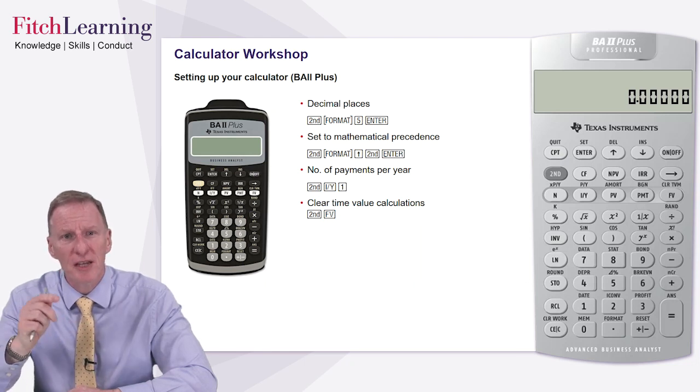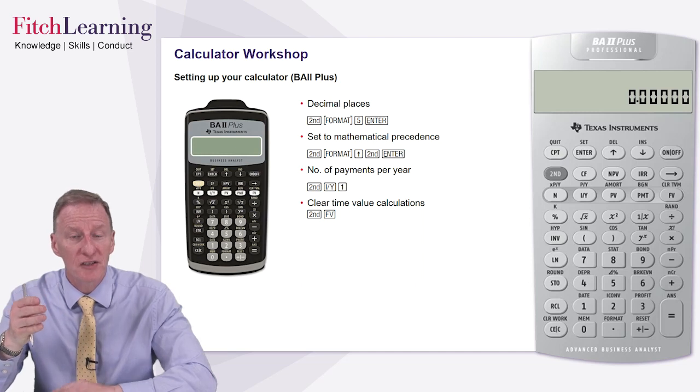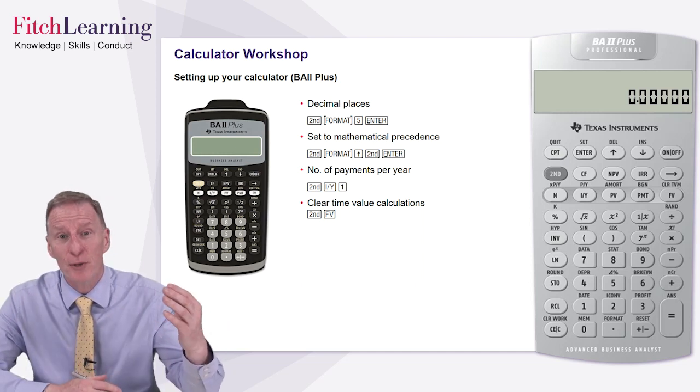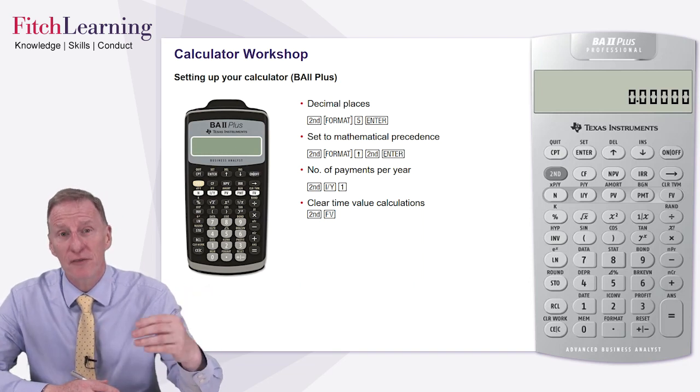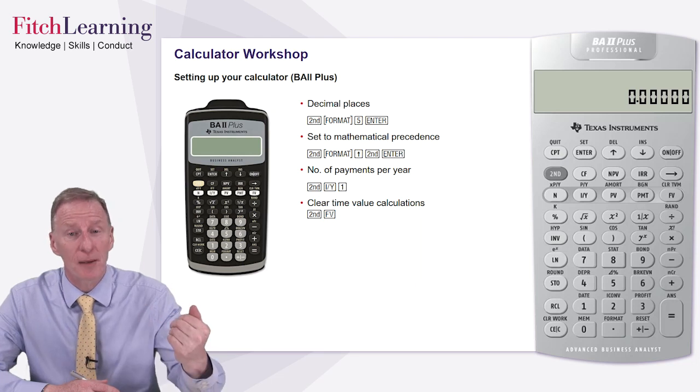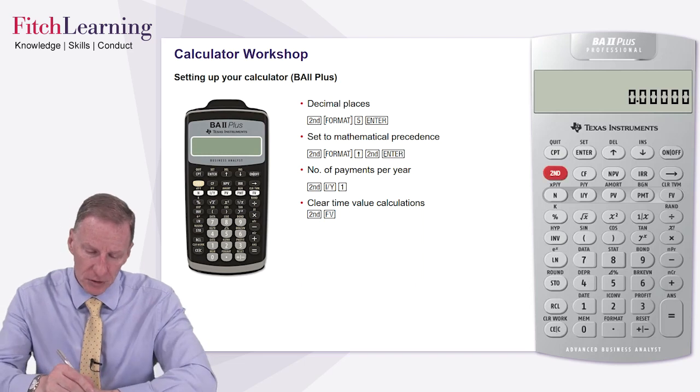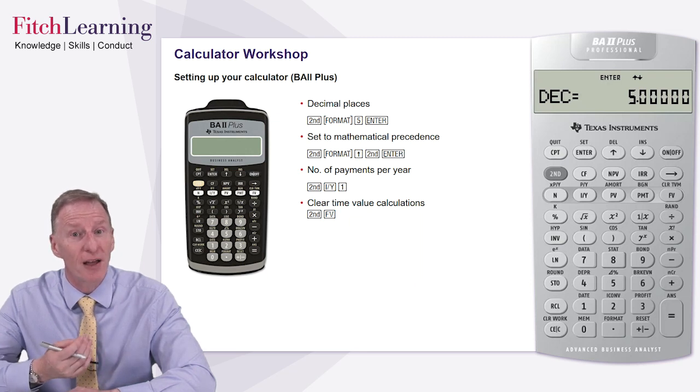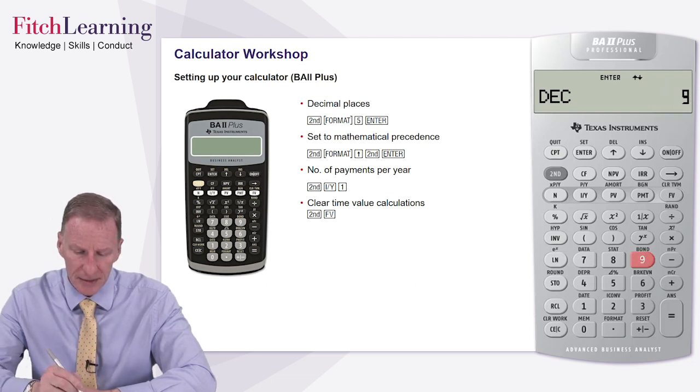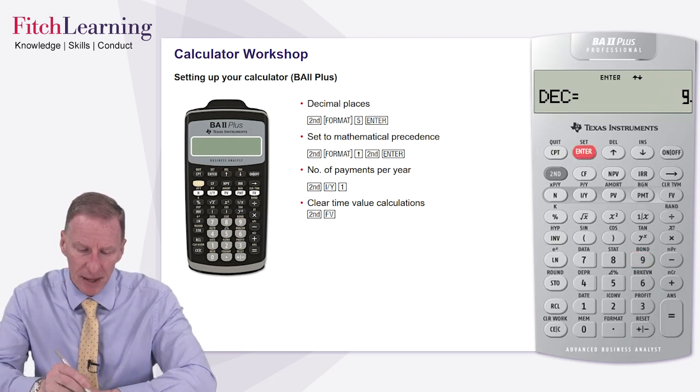If I was now to come out of this particular setting, so by doing second and then quit, you can now immediately see how the display has changed to show five decimal places. But let's also think about how we could have a floating decimal place, something that I quite like, because it means if we get an answer that is a nice round number, then it shows discreetly on the screen. But if we need greater granularity, then that's also something that is immediately available to us. So again, we'll do second and then the decimal place, the format button on the bottom row. We've now currently got this set to five decimal places. Now let's change that to nine. So we'll do nine and remember to press the enter button.